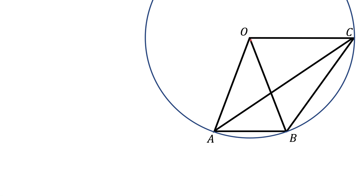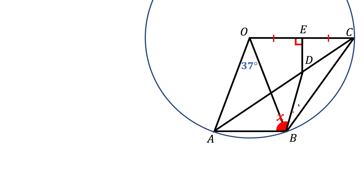Here we have a circle with a center at point O, and points A, B, and C on that circle. Quadrilateral OCBA is a trapezoid where OC is parallel to AB. We know the angle between side AO and diagonal OB is 37 degrees. ED is the normal bisector of side OC, meaning point E is the midpoint of OC and ED is at 90 degrees to OC. D is the point of intersection of that bisector and diagonal AC. We are asked to find angle X, which is angle ABD.